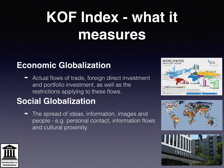Social globalisation is estimated by personal contact, international telephone traffic, transfers, tourism, foreign population and international letters, information flows, internet users, television ownership, trade in newspapers and cultural proximity, number of McDonald's restaurants, number of Ikea shops and trade in books.